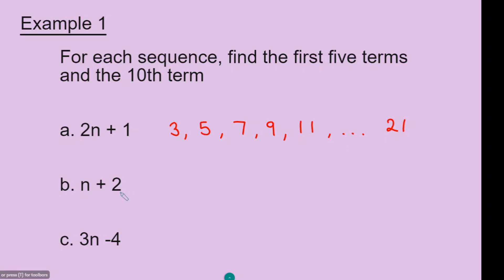We go to the second sequence. The first term will be 1 plus 2 equals 3. The second term will be 2 plus 2 equals 4. The third term: 3 plus 2 equals 5. To find the fourth number in the sequence, n will be 4: 4 plus 2 equals 6. To find the fifth number, n is 5: 5 plus 2 equals 7.